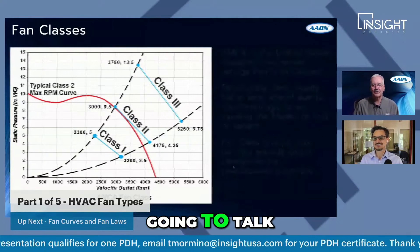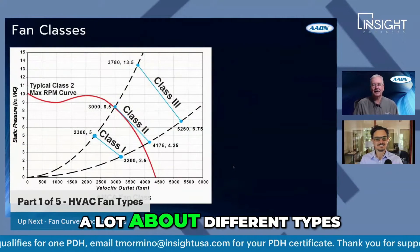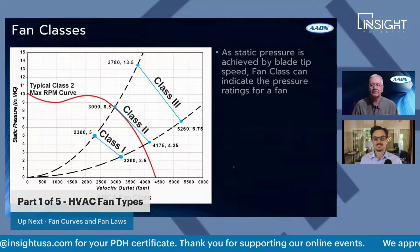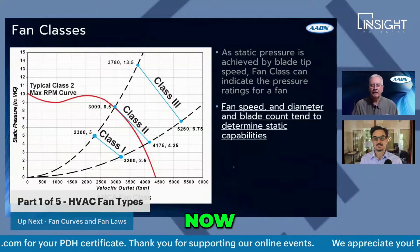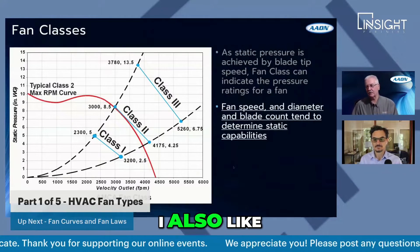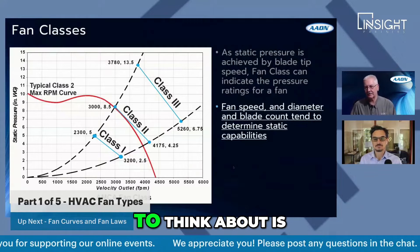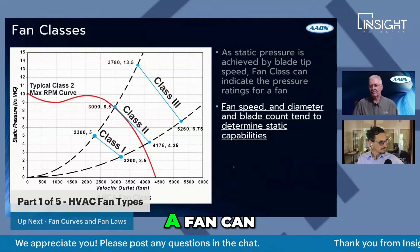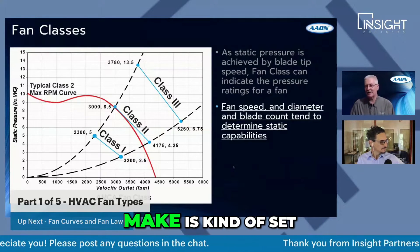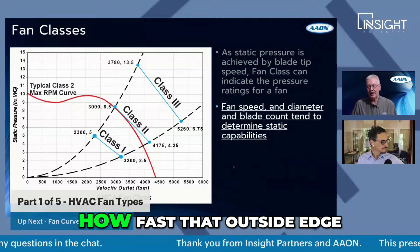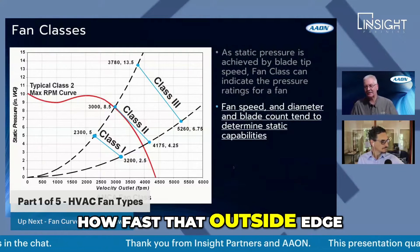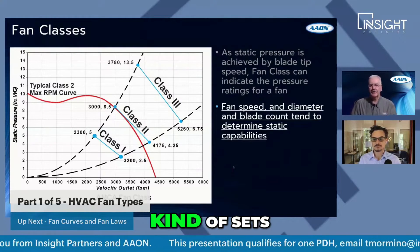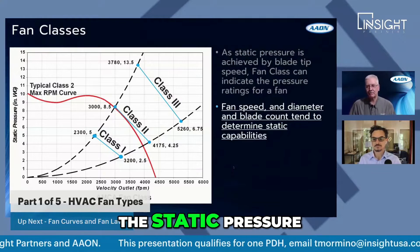We're going to talk a lot about different types of fan failures. One of the things I also like to think about is that the static pressure a fan can make is kind of set by the tip speed — how fast that outside edge of the blade goes around kind of sets the static pressure.